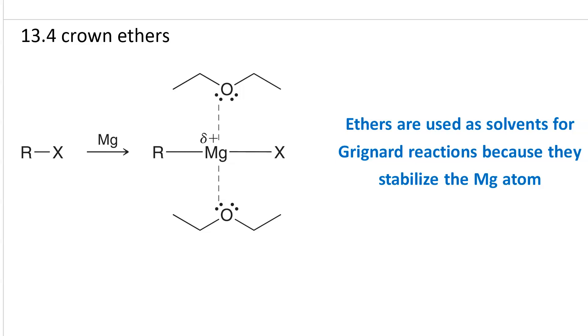Crown ethers. Recall that we use ethers as the solvent in the Grignard reaction. The reason for this is the ion-dipole interaction between the magnesium ion and the oxygens on the ethers stabilizes that magnesium.